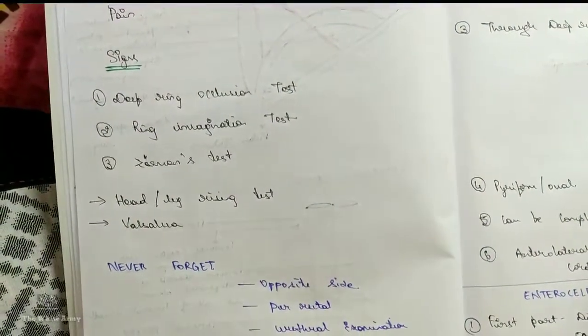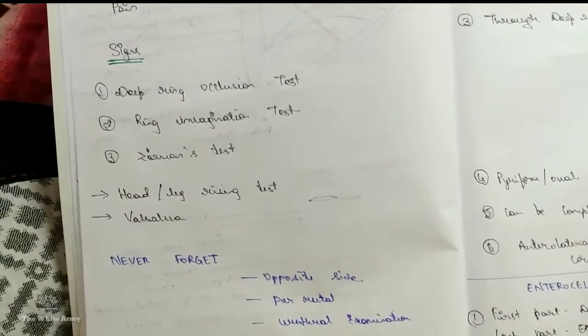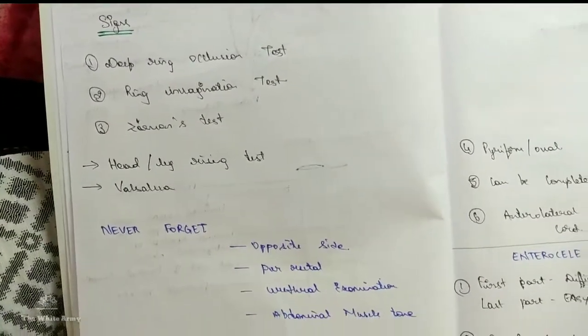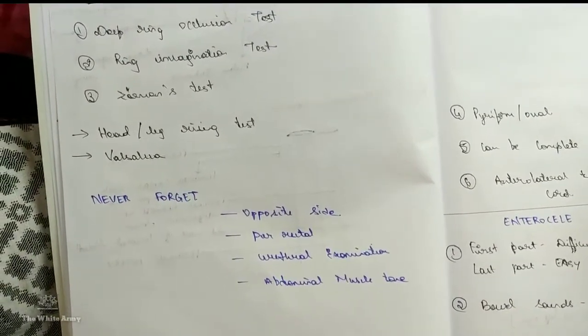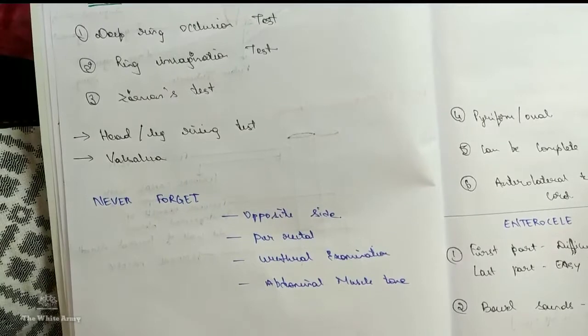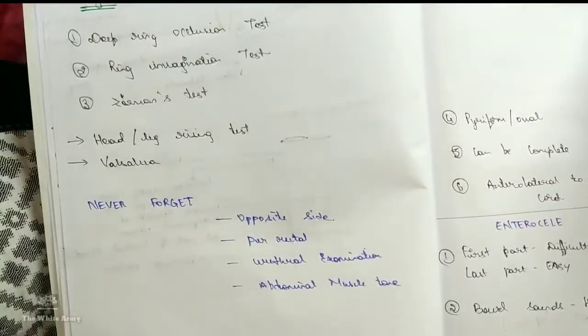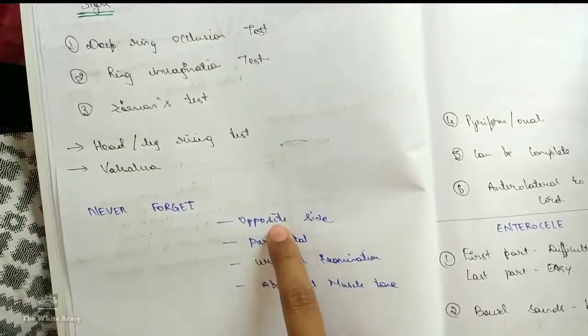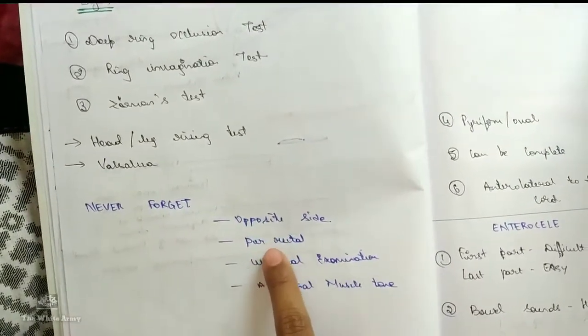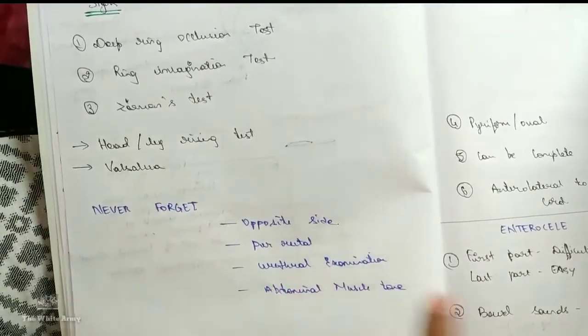Other two tests to check the abdominal wall tone, that is head rising and leg rising or Valsalva maneuver. To check the tone of the abdominal wall muscle and Malgaigne bulgings. After examination hernia, we should never forget to examine the opposite side of the person, per rectal examination, urethral examination and abdominal muscle tone.